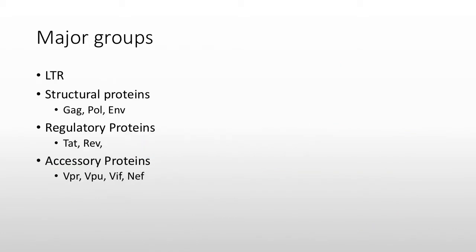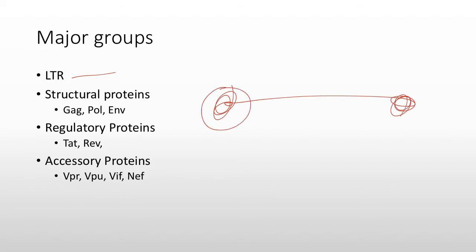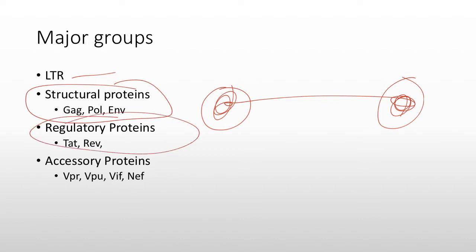One major group not shown in the image is the LTR, the long terminal repeats. The LTR segment is at both the 5' and 3' ends of the genome, and it dictates whether the virus is active or inactive. Then you have structural proteins GAG, POL, and ENV; regulatory proteins TAT and REV; and the accessory proteins VPR, VPU, VIF, and NEF.